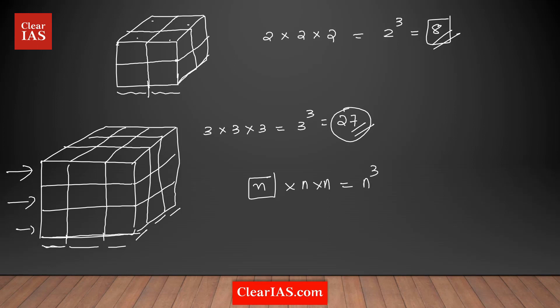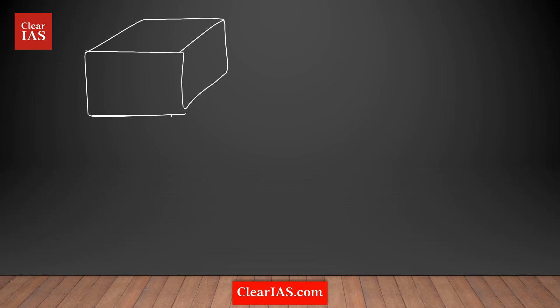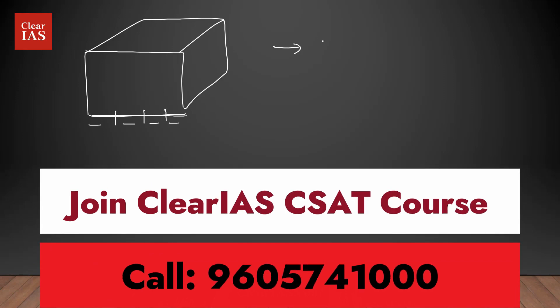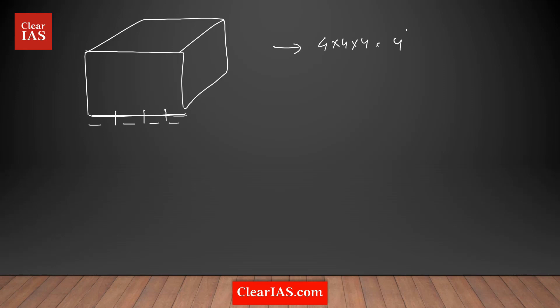Here you can see 1, 2, 3 sections, so n = 3 and total cubes = 3 cubed. Now let's take another example with a bigger cube. I'm dividing each edge into 4 sections — 1, 2, 3, 4. So the total number of cubes you get is 4 × 4 × 4 = 4 cubed, or 64 cubes.